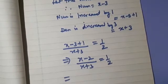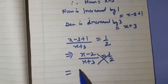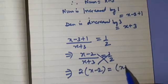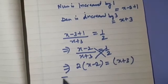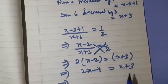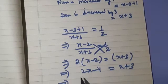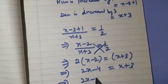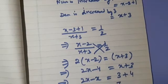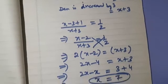We solve this by cross multiplication: 2 times x minus 2 equals x plus 3. Expanding gives 2x minus 4 equals x plus 3. Transposing x to the left side and minus 4 to the right side, we get 2x minus x equals 3 plus 4, which implies x equals 7.